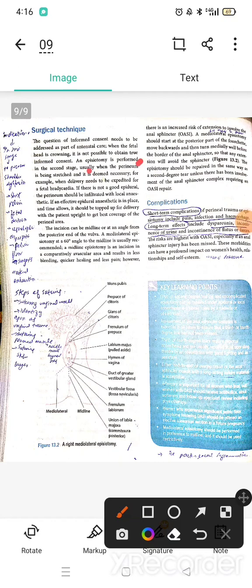If there is no good epidural, the perineum should be infiltrated. If epidural anesthetic is in place and time allows, it should be topped up for delivery to get the best coverage of the perineal area, including the midline and posterior end of the vaginal wall.